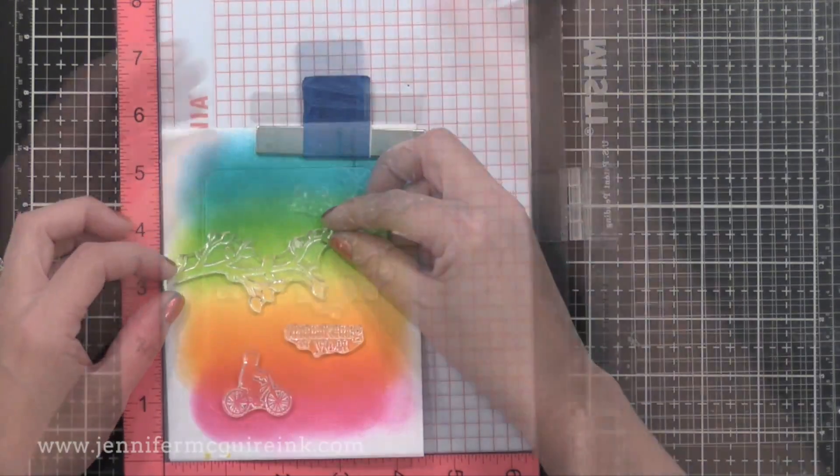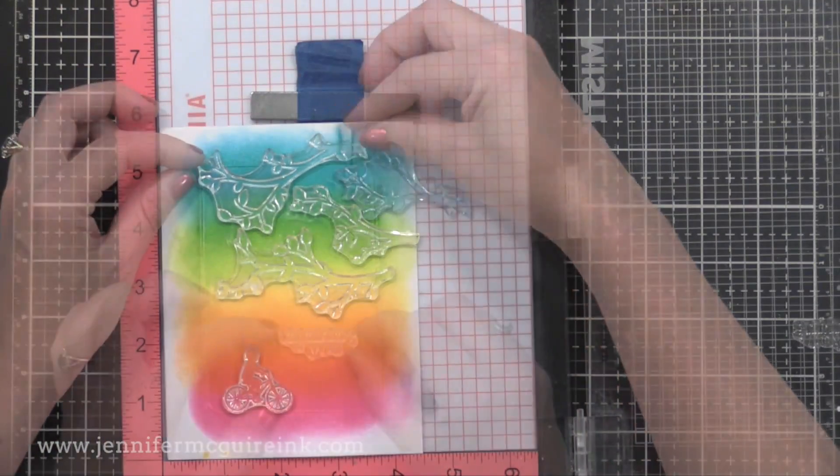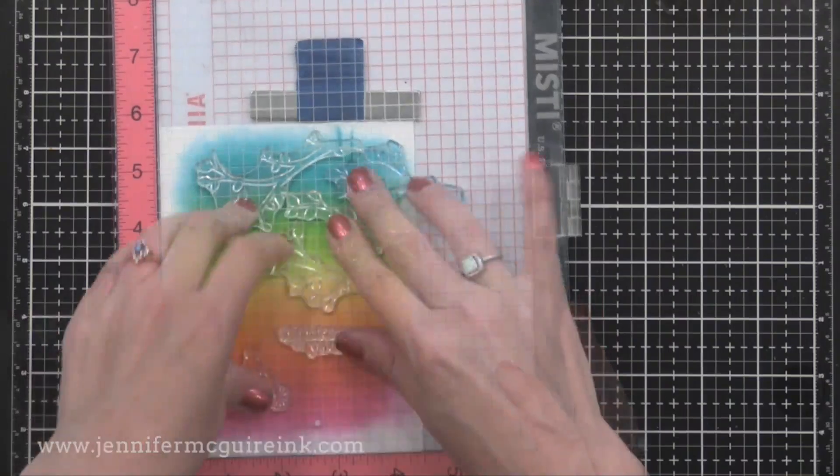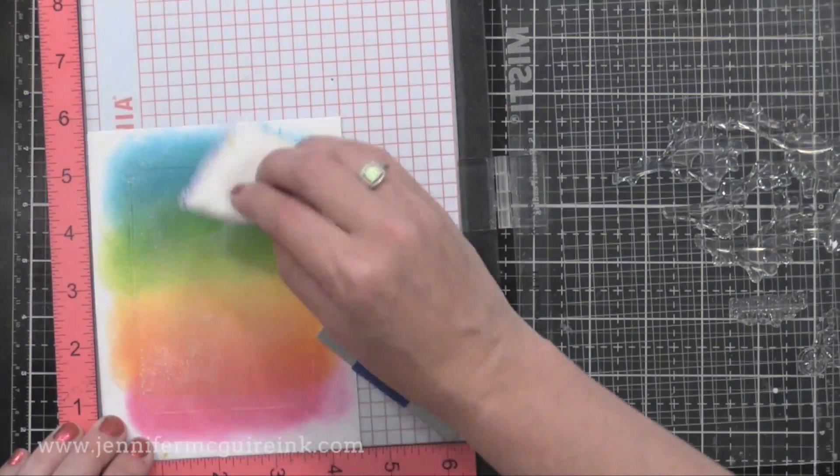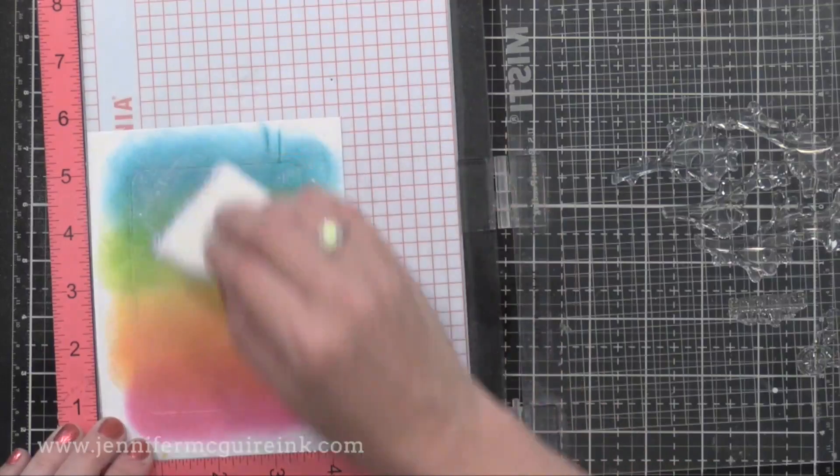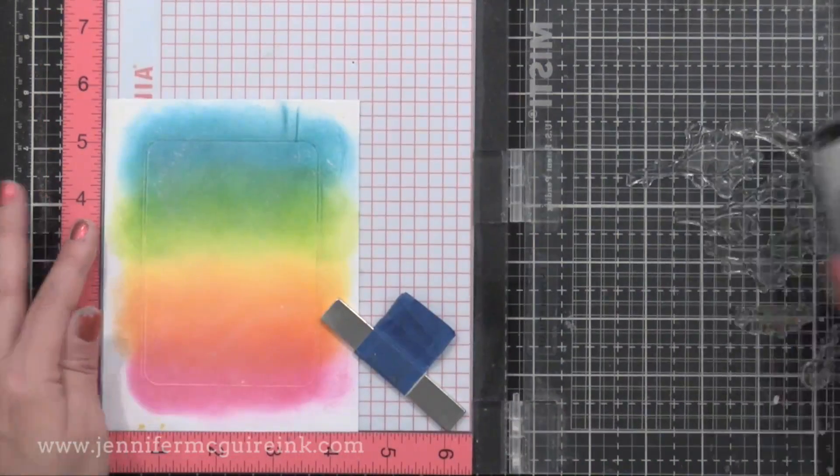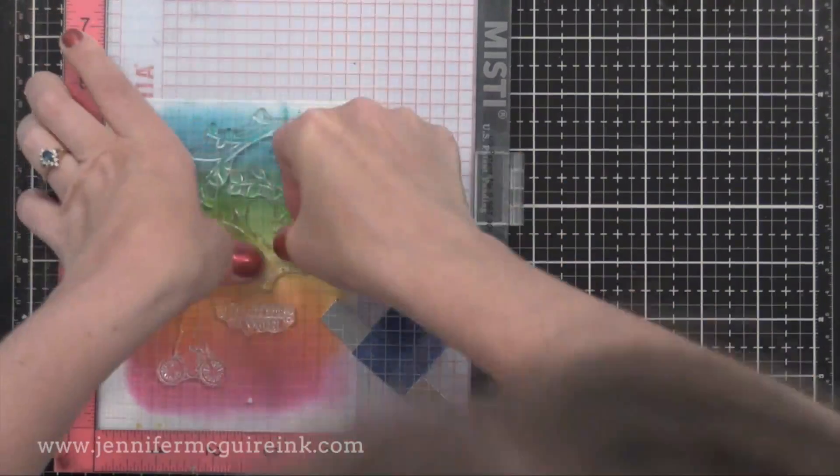Once that's dry, I'm applying some stamps right over it, just arranging them. I still have that mask in place. I'm going to stamp these images with VersaMark ink, but I'm being sure to use anti-static powder tool, since Distress Ink sometimes holds onto your embossing powder.